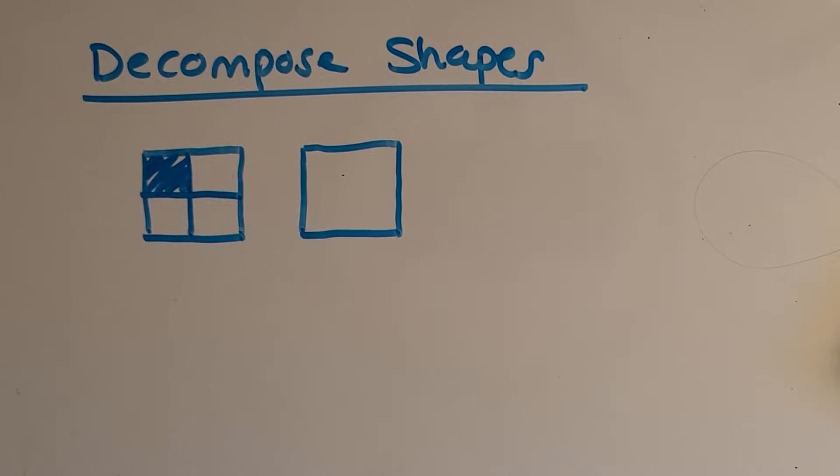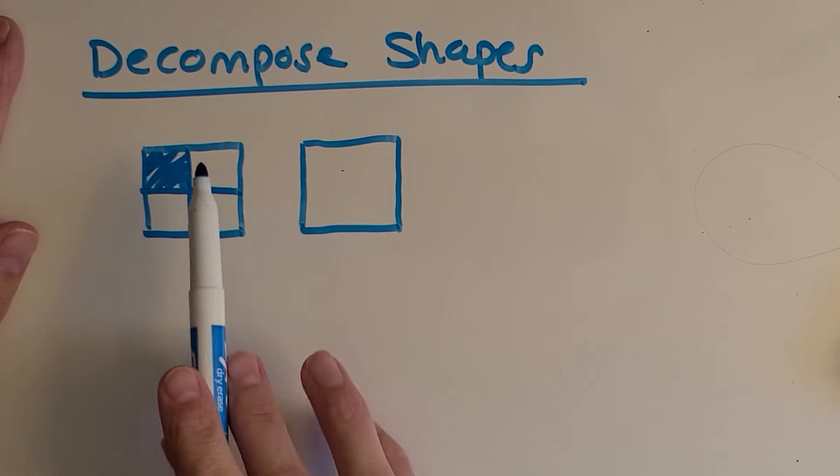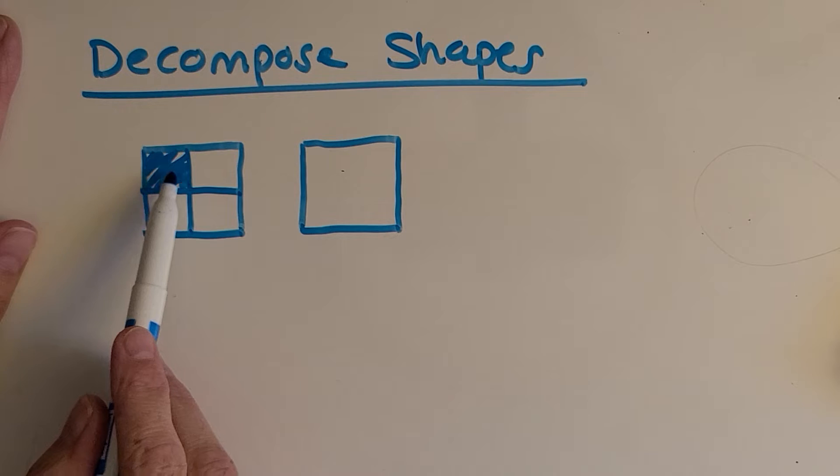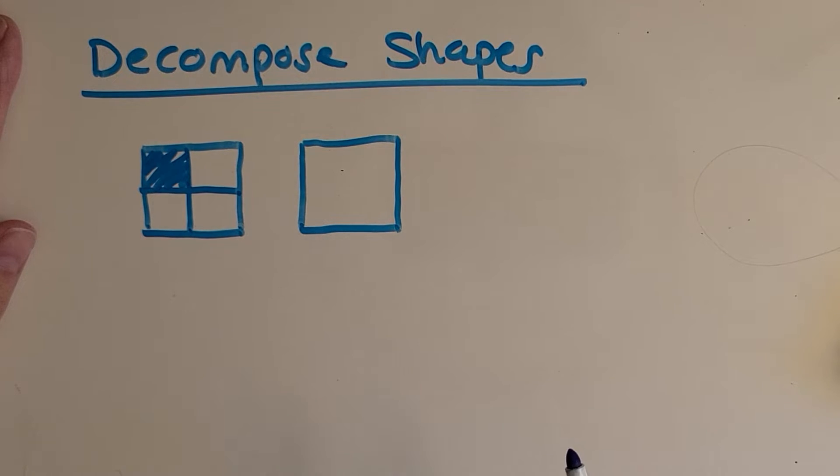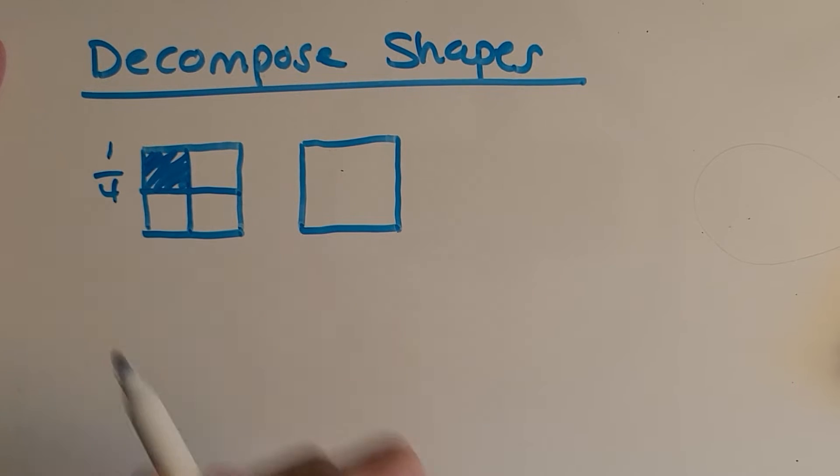So this first problem, I've chosen a square and I have chopped it up into how many equal parts? Great, four. So what fraction can I call the shaded portion? Awesome, one out of four, so one fourth.